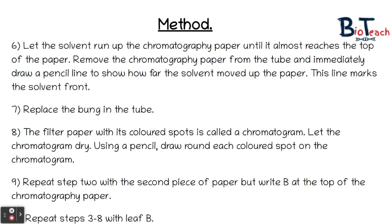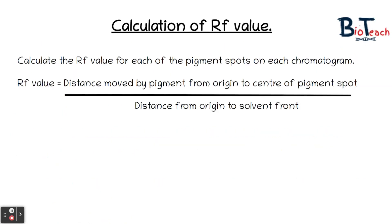The chromatography paper with its coloured spots is now called a chromatogram. Let this chromatogram dry and use a pencil to draw around each of the coloured spots that you see on the chromatogram. Repeat all of the steps that we've talked about with the second leaf creating another chromatogram with leaf B, and by the end of it you should have two chromatograms that you can compare to each other.